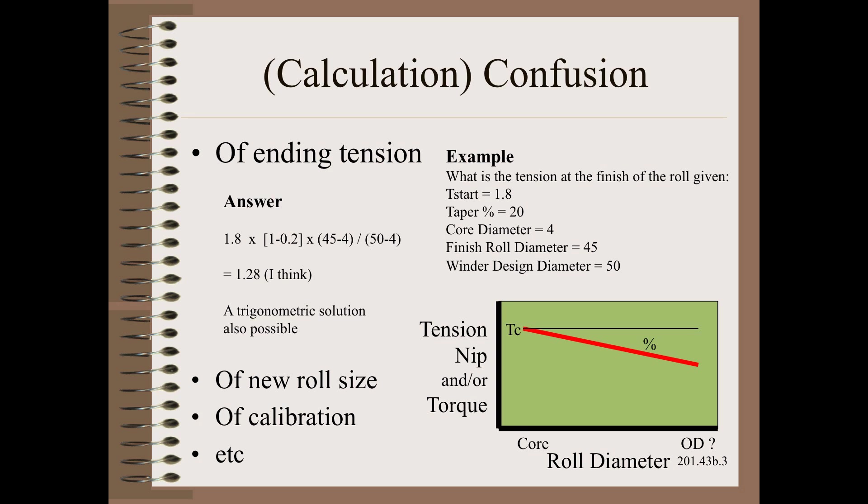First we must find out from the builder's instruction manual or the builder himself whether the taper takes place starting at zero diameter or starting at core diameter. Similarly we need to know if the taper is calculated through the finished diameter of the current roll or the design diameter of the machine. We assume here the most common: starting at the zero diameter and tapering to the design diameter of the machine.